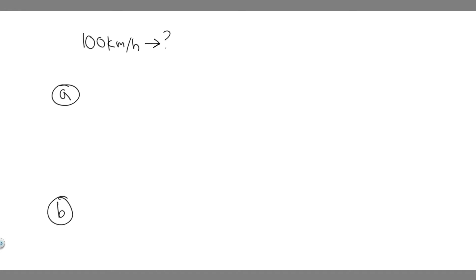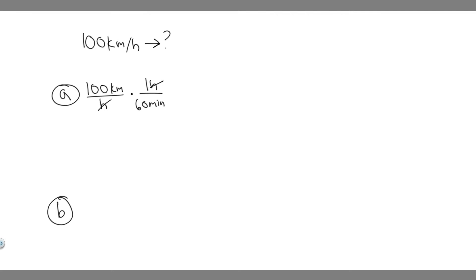So let's go ahead and start with A. We have 100 kilometers per hour, and we're going to be converting it into meters per second. You want to set up into a fraction like this, and then tackle each of these parts separately. The first thing we want to do is convert from hours into seconds. We know that for every one hour there's going to be 60 minutes. Notice the hours will cancel, and then you're just going to have kilometers per minute.